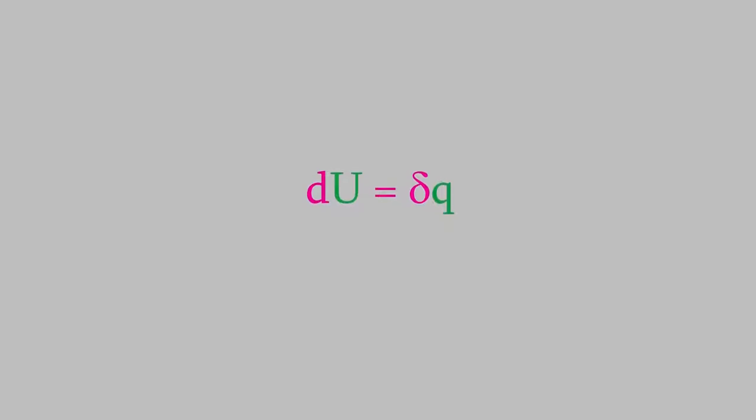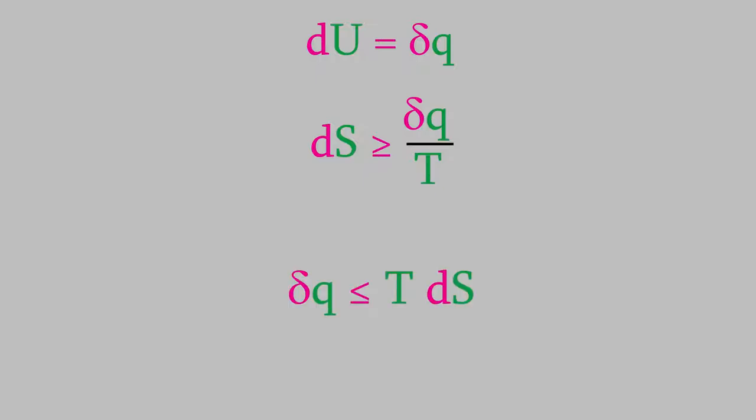Since we're trying to determine whether or not the reaction is spontaneous, it makes sense for us to also think about the entropy of the system. We know that the second law of thermodynamics tells us that the entropy is always greater than or equal to the heat divided by T. If we rearrange this equation a little, we have this. We can substitute this inequality into our expression for dU to get this equation. So this tells us that dU is always less than or equal to T dS. It's important to keep in mind that this is true for a system where the volume and temperature are constant.